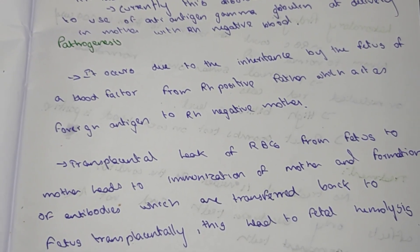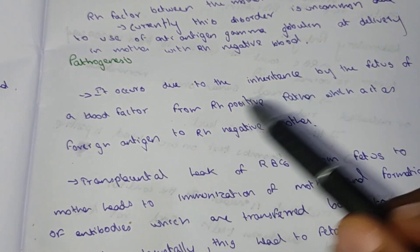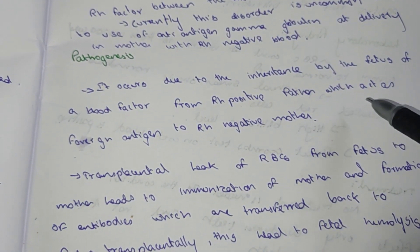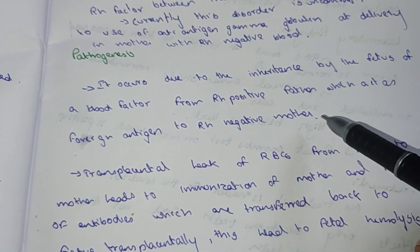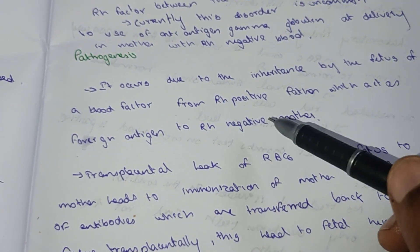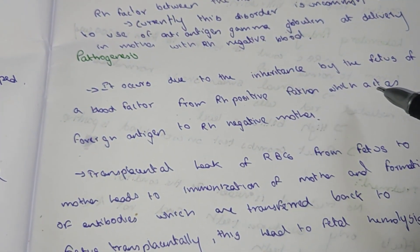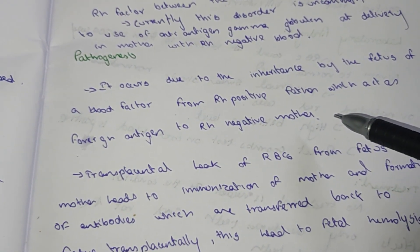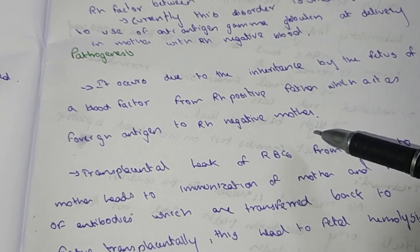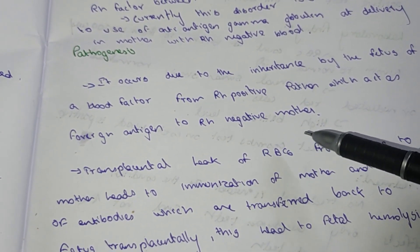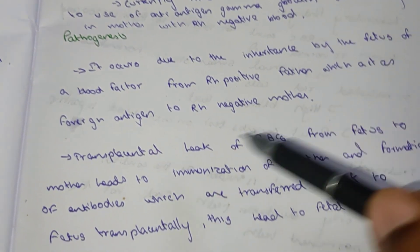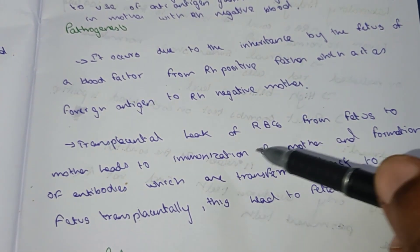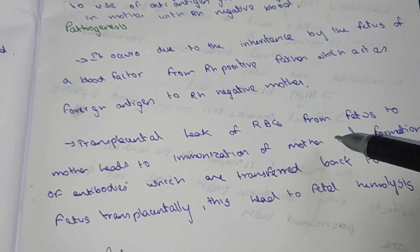Pathogenesis: it occurs due to the inheritance by the fetus of a blood factor from an Rh positive father, which acts as a foreign antigen to the Rh negative mother. There is a transplacental leak of RBCs from the fetus to the mother.